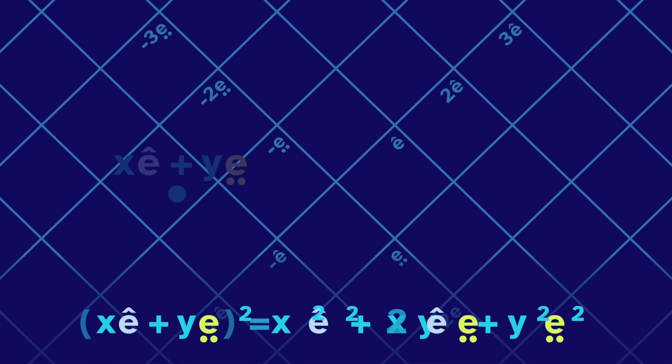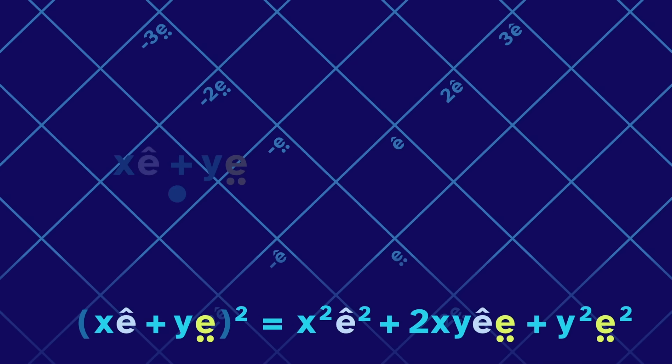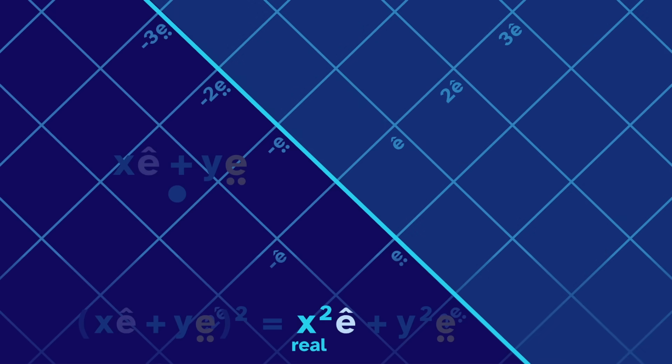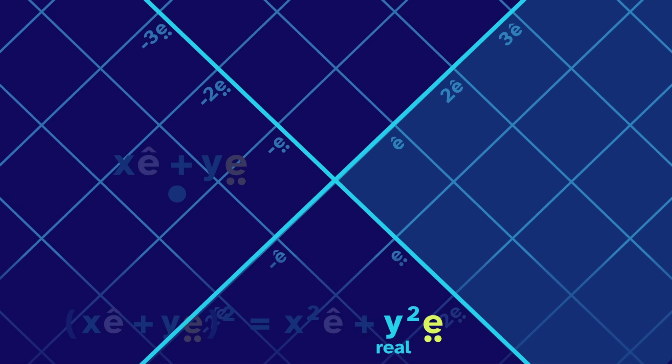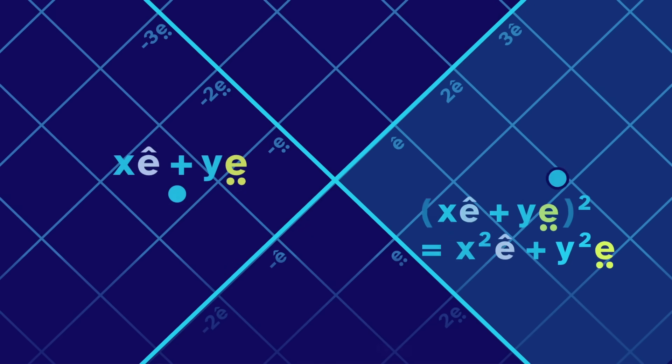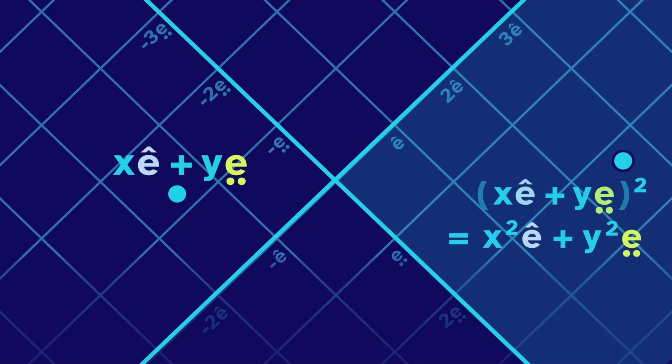And if we square the number, then e hat and e shoes multiply to zero, so this term disappears. And since the e's square to themselves, those squares disappear. We're left with x squared e hat, and x is real, so the e hat is non-negative. And then we have y squared e shoes, meaning that e shoes is also non-negative. This is another proof that all square splits are in this section.